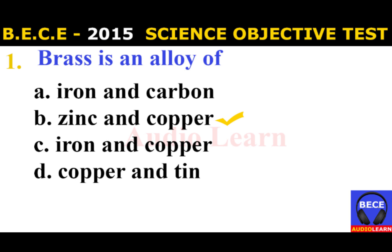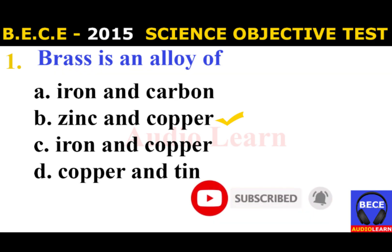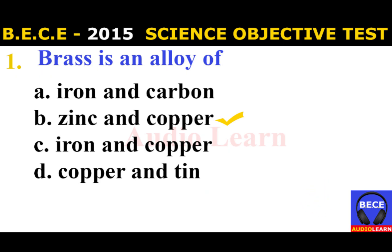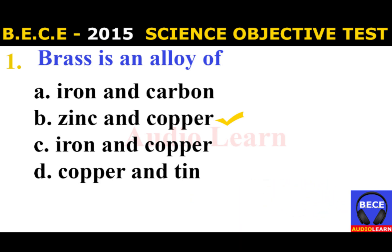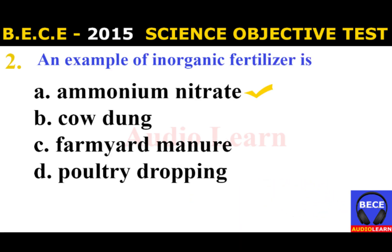B.E.C.E. 2015 Objective Test. Question 1: Brass is an alloy of A. Iron and Carbon, B. Zinc and Copper, C. Iron and Copper, D. Copper and Tin. The answer is B. Zinc and Copper. Brass is an alloy of Zinc and Copper.